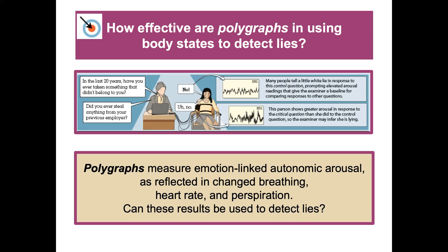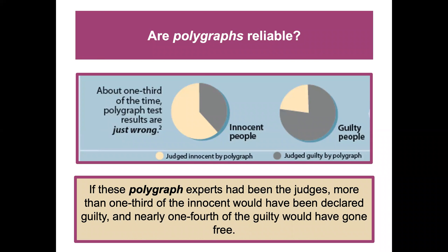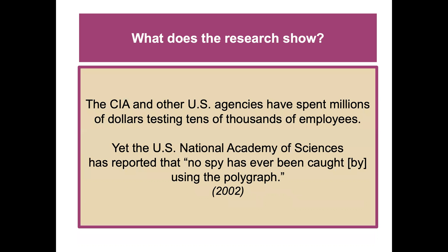How effective are polygraphs in using body states to detect lies? Polygraphs measure emotion-linked autonomic arousal reflected in changing breathing, heart rate, and perspiration. However, they are highly unreliable: if polygraph experts had been the judges, more than one-third of the innocent would have been declared guilty and nearly one-fourth of the guilty would have gone free. The CIA and other U.S. agencies have spent millions testing thousands of employees, yet the U.S. National Academy of Sciences reported that no spy has ever been caught using the polygraph.